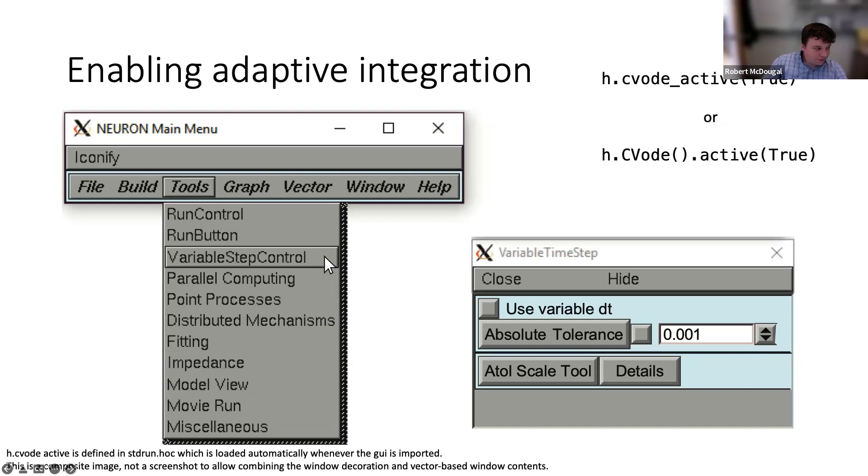The Variable Time Step dialogue box has a checkbox for using variable dt. If you hit that checkbox, it will use variable dt. It will choose what time step it thinks you need at every given advance.